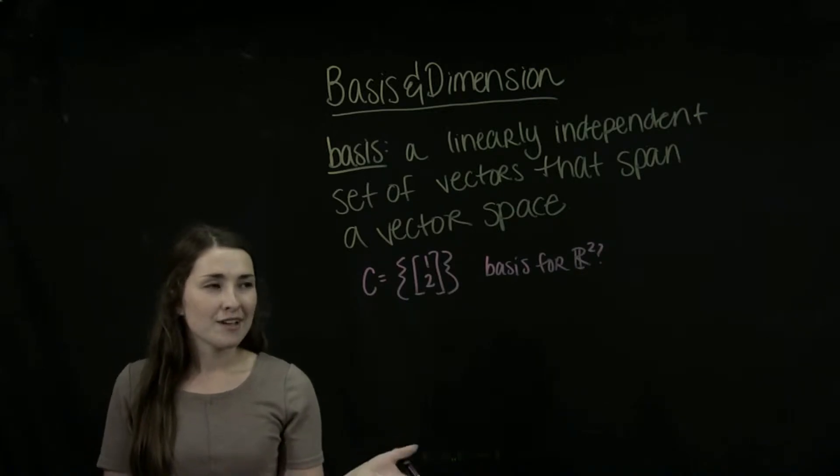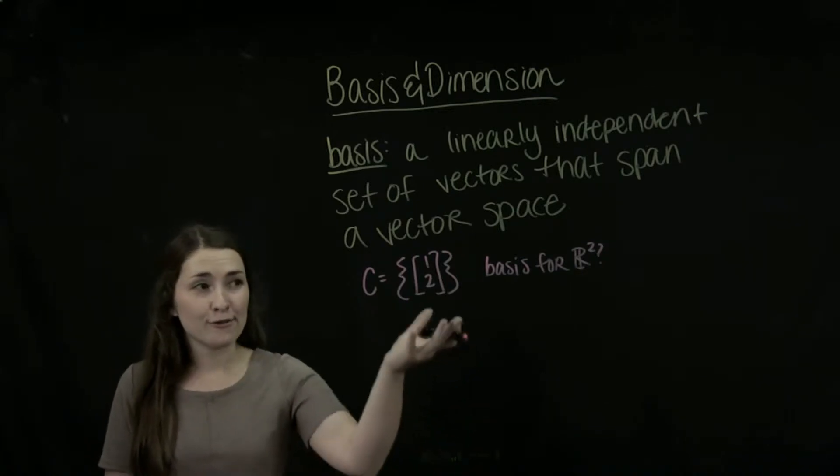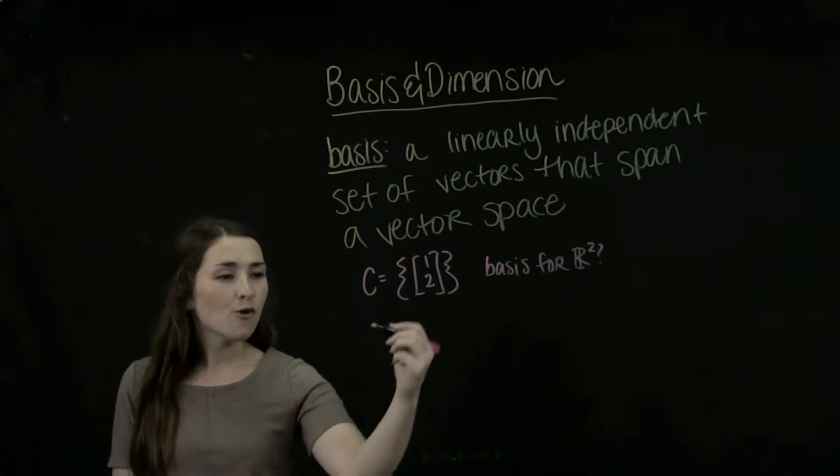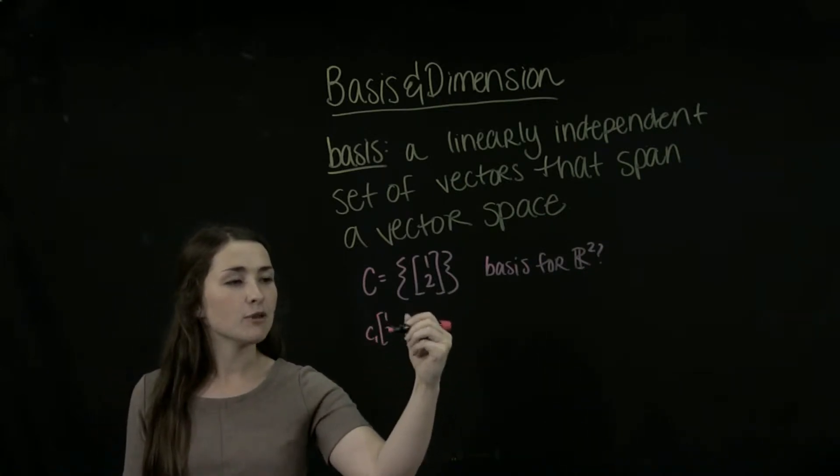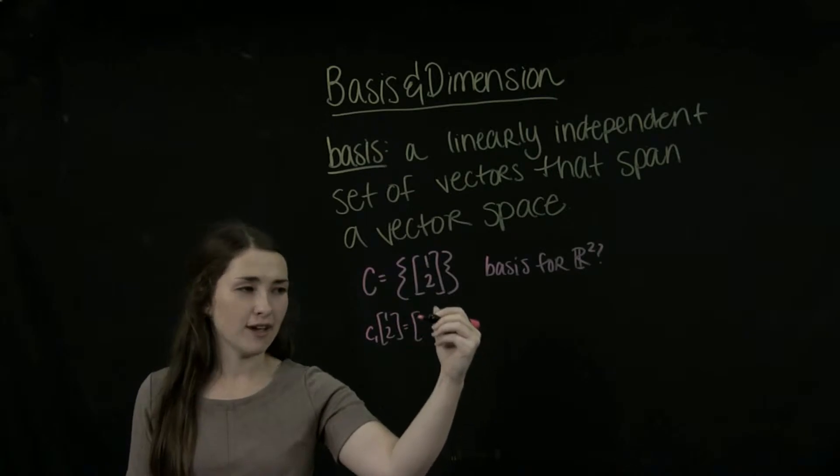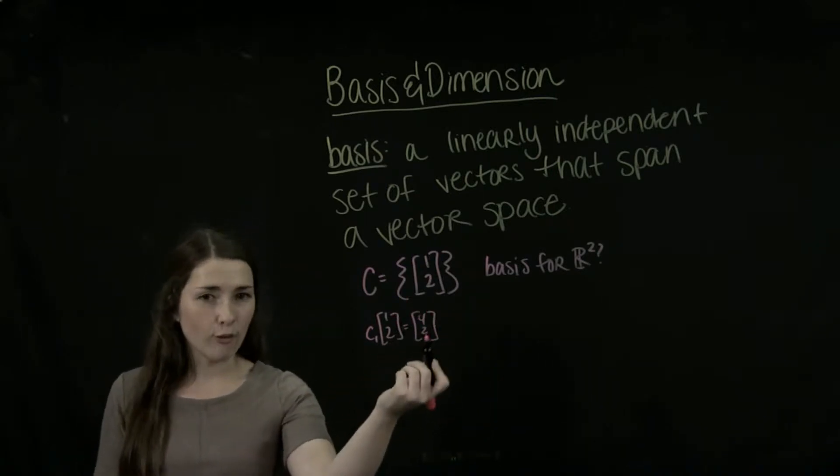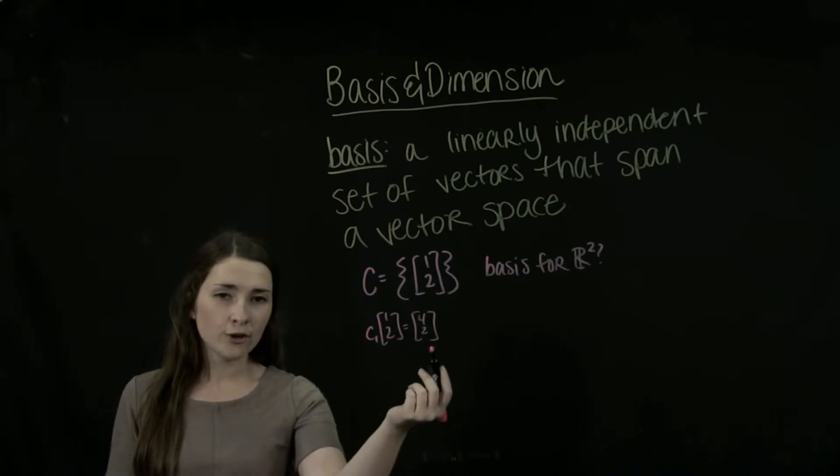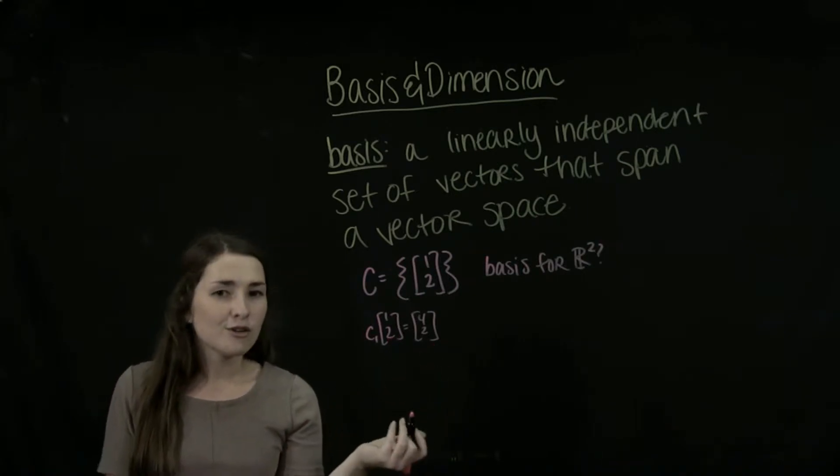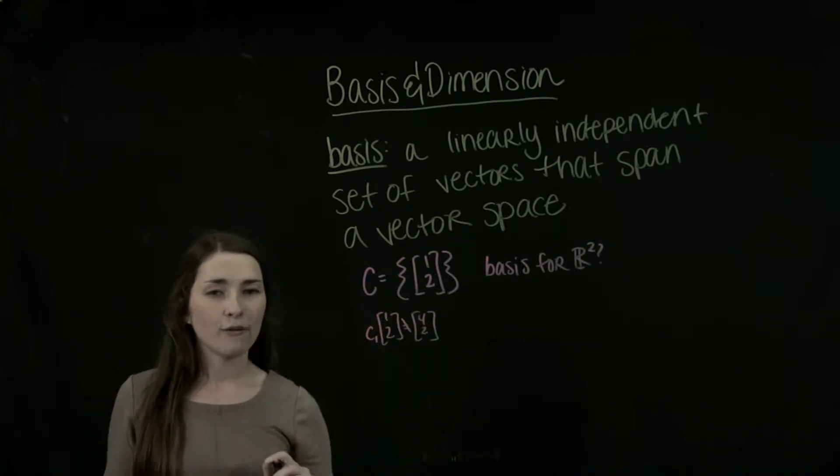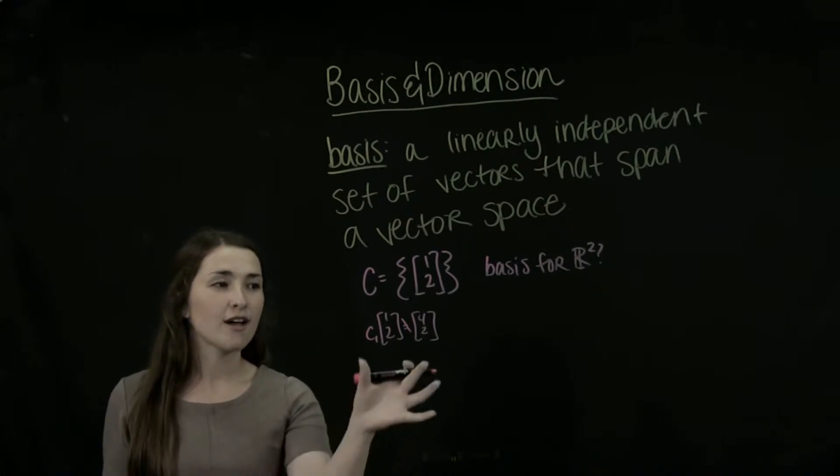No, because I mean, if we wanted to get like 4, 2 out, then we have no C1 that we can multiply by 1, 2 to get the vector 4, 2. Because we'd have to multiply 1 by 4, we'd only be able to multiply 2 by 1. So there's no way that we can find a C1 value that this works.